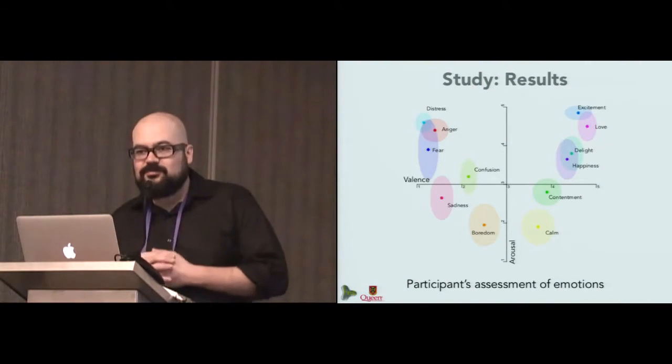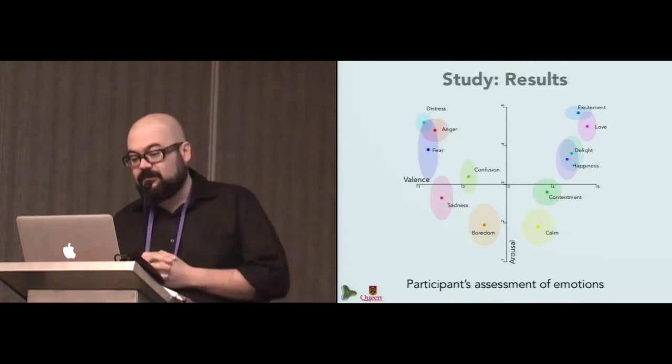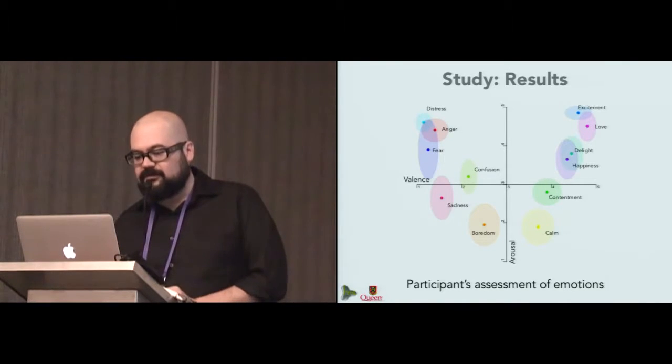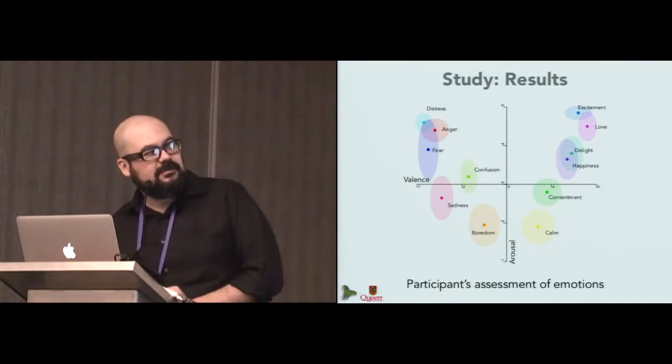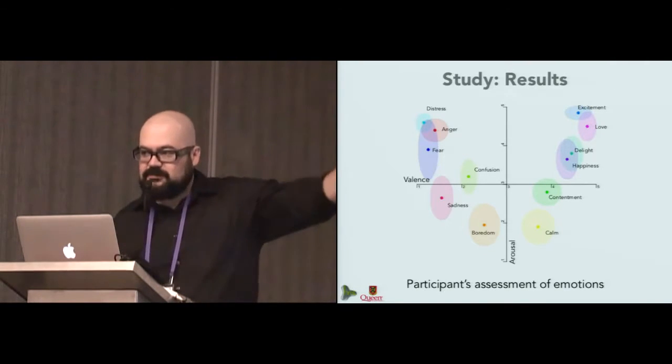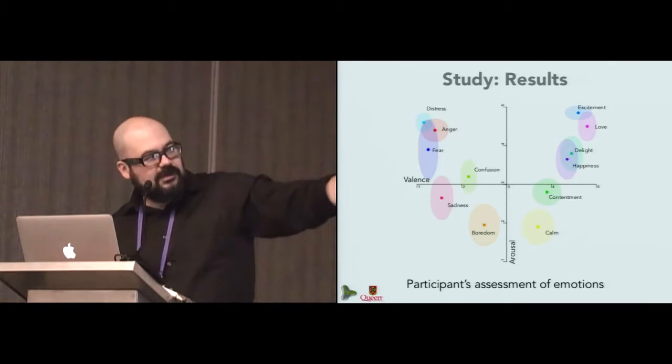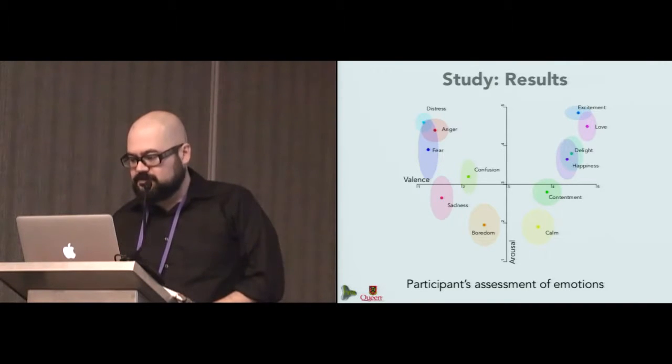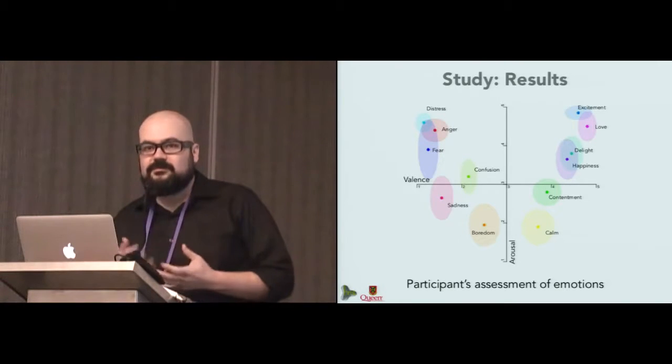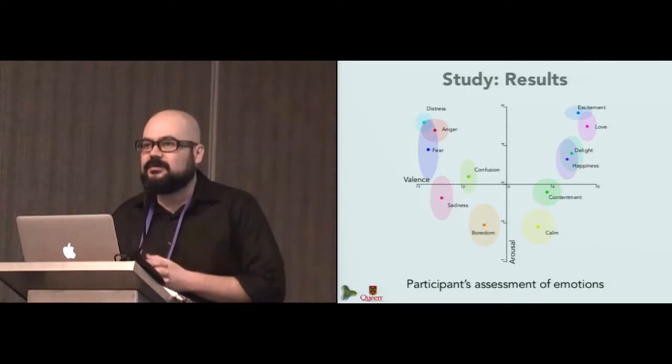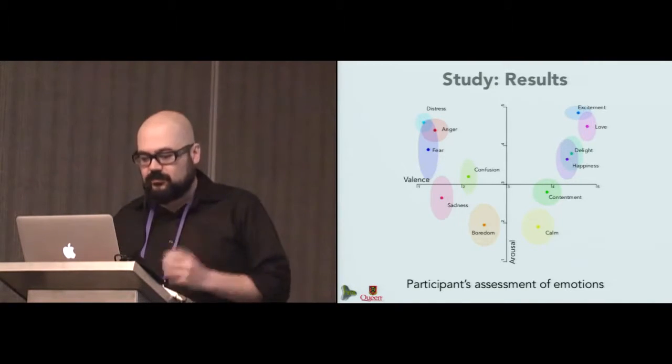We asked the participants to rate the valence and arousal of the emotions, and we found that there was some agreement, like enough agreement, which makes sense. And this is a figure in which we show where the emotions are located. The ovals represent the standard deviation of both parameters for each emotion. We found those locations were similar to those found by Russell, so I think that somehow this validated the agreement in terms of these emotional parameters for emotion for our participants.